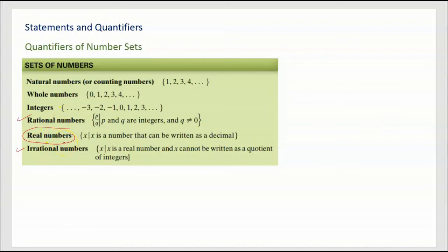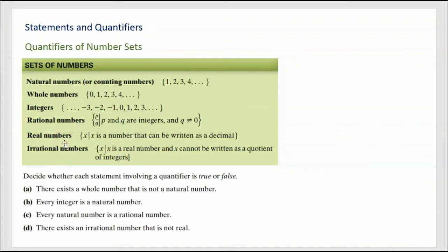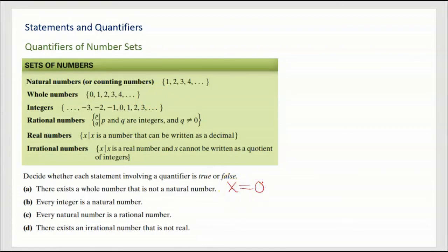Let's decide whether each statement involving a quantifier is true or false. First: 'There exists a whole number that is not a natural number.' If we can find one, it's true. Natural numbers are 1, 2, 3, 4... Whole numbers are 0, 1, 2, 3... What about x = 0? There does exist a whole number that is not a natural number, so this is a true statement.